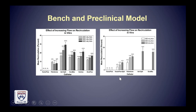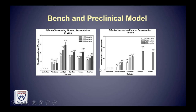From there we went to a bench and preclinical model to validate what was shown in CFD testing. In terms of recirculation — where less is more favorable — at flow rates vastly exceeding what would be used for clinical hemodialysis, the vector flow catheter outperformed all other catheters on the market. Similarly, in an animal model, recirculation was basically absent at all flow rates achieved.